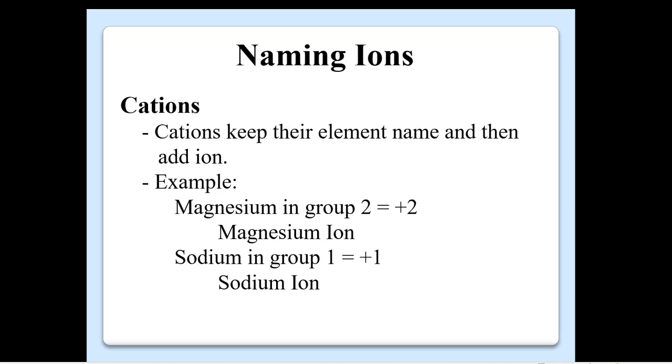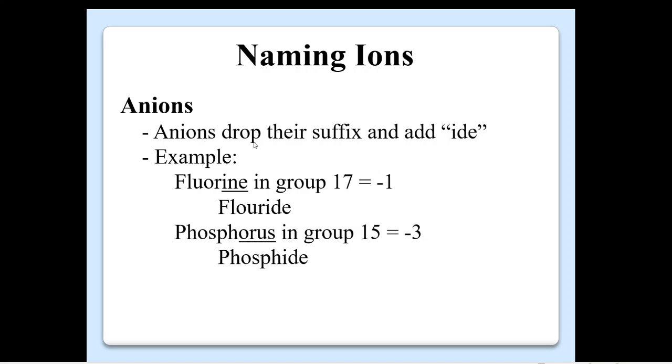All right, what about naming them? So what do we call them? Because once they change, they are not the same that's on the periodic table. So cations, the ones that become positive, they keep their element name and then add the word ion. So for example, magnesium is in group 2. It becomes a plus 2. We call it a magnesium ion. And then sodium is in group 1. It becomes a plus 1. And it is a sodium ion. So that's how you name cations. As far as anions, the anions actually drop their suffix and add the word IDE. There's not one fast rule. It's just dropping it so it sounds right. For example, fluorine is in group 17. It will actually gain an electron. So we're going to drop the INE and add it to the IDE there. And it becomes fluoride. And then phosphorus. We're going to drop all this. And it becomes phosphide because it becomes a negative 3.